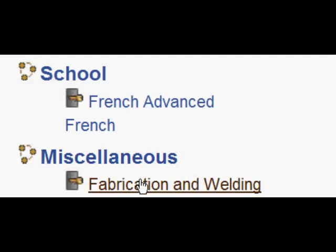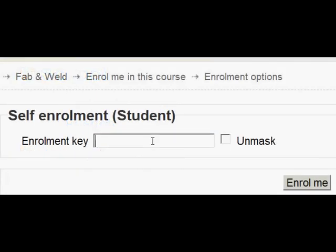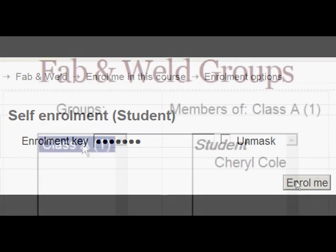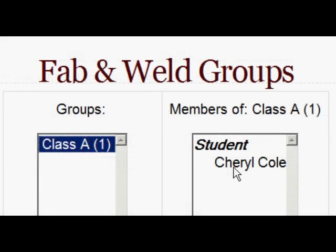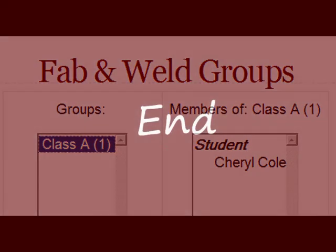When she clicks on the course name she is prompted to enter the group enrolment key for Class A, then she clicks 'enrol me'. As the teacher we can see that this works — there she is in the group called Class A in the course. And that's how to do it in Moodle 2.